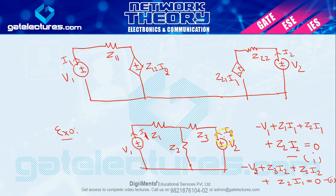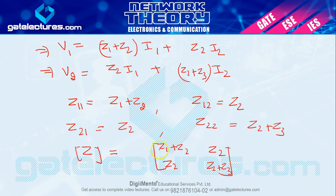This is the Z parameter for the T-network. I used it as an example, but the T-network Z parameter is a standard circuit result that can be directly used in many questions — so remember it. Z11 = Z1+Z2, Z12 = Z2, Z21 = Z2, Z22 = Z2+Z3. Next, we will study the Y parameter (admittance parameter) in the next lecture. I hope the Z parameter is clear. If you have any doubts, mention them in the comment section. Thank you.